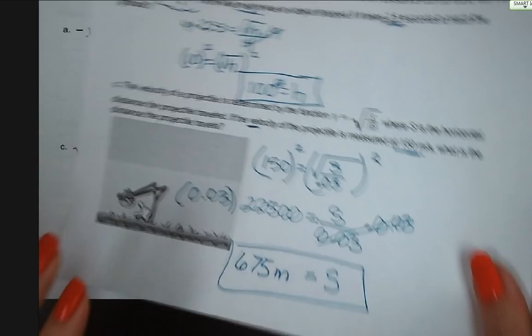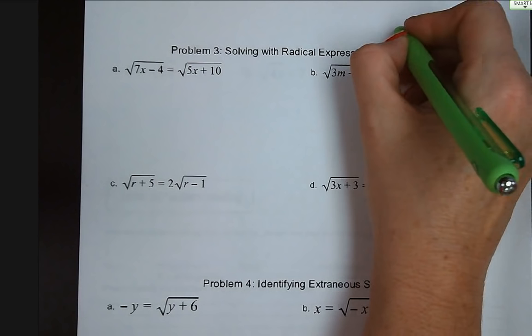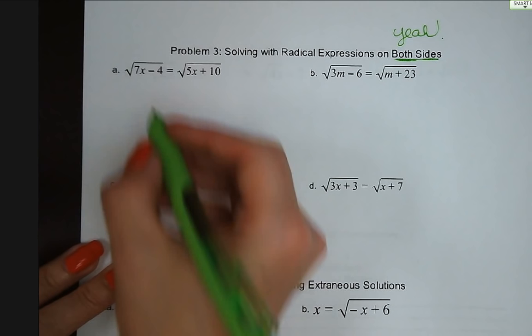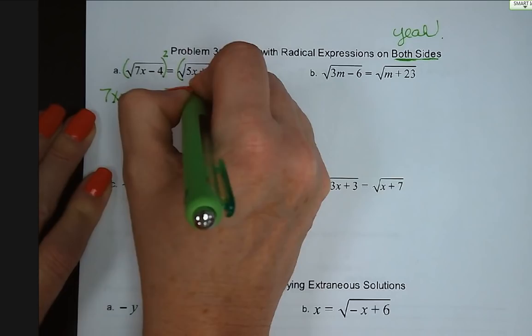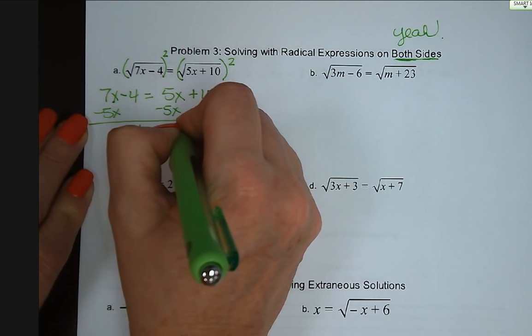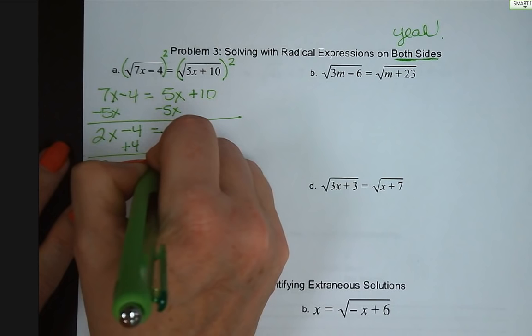Problem three: solving radical expressions on both sides. Both sides have isolated radicals, so we square both sides of the equation, giving us 7x minus 4 equals 5x plus 10. The square root and the square cancel out. Subtract 5x from both sides: 2x minus 4 equals 10. Add 4: 2x equals 14. Divide by 2: x equals 7.